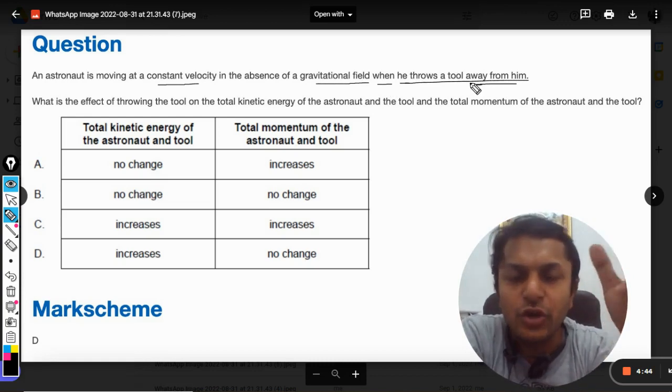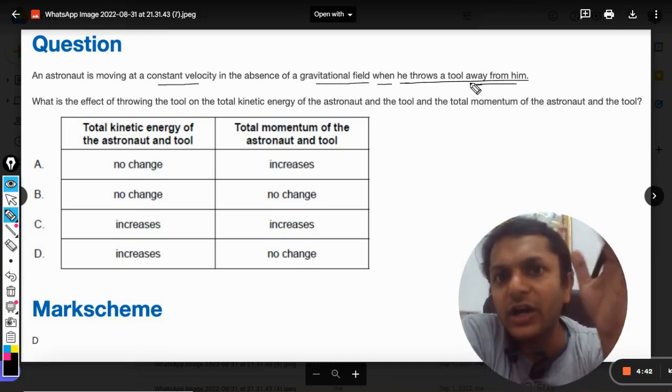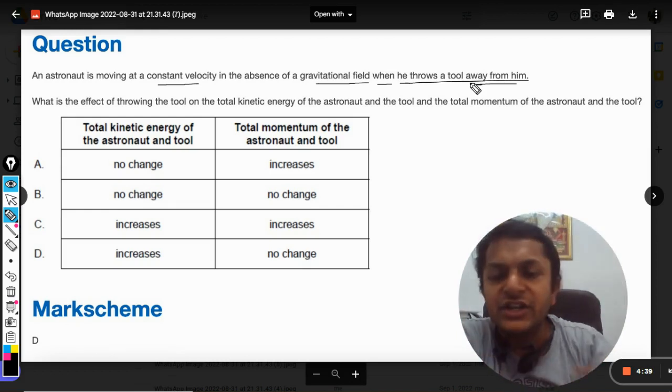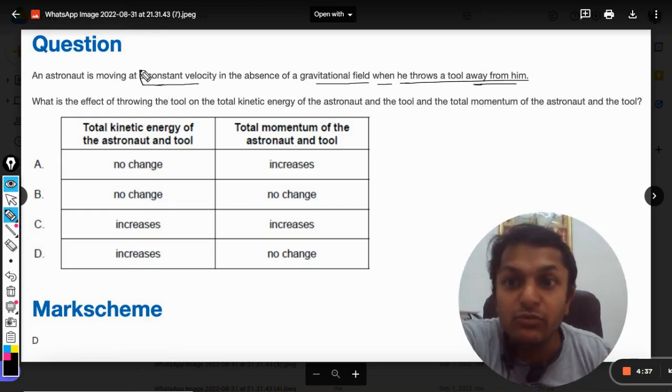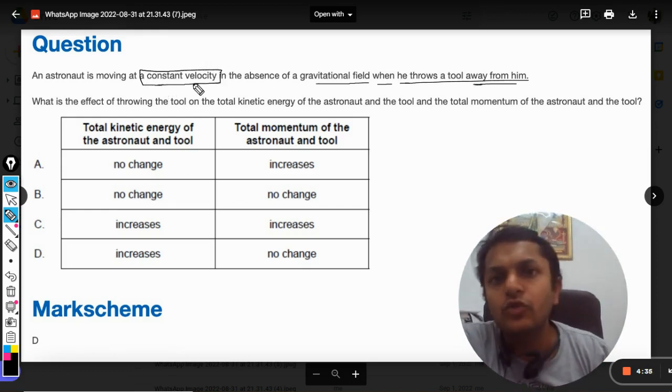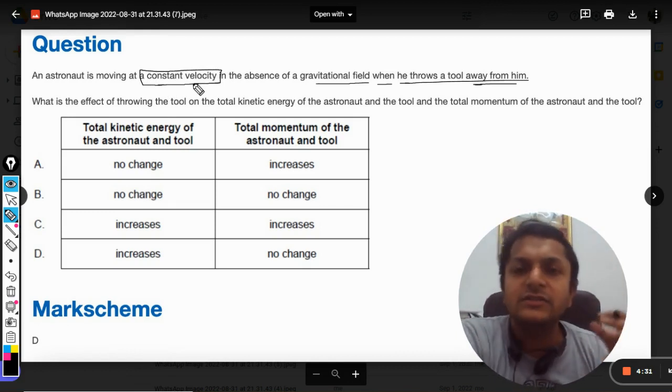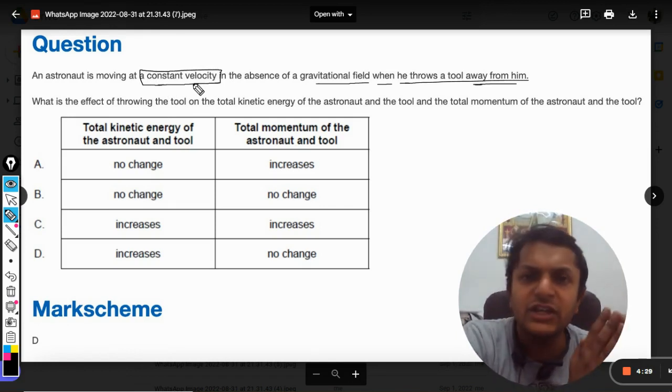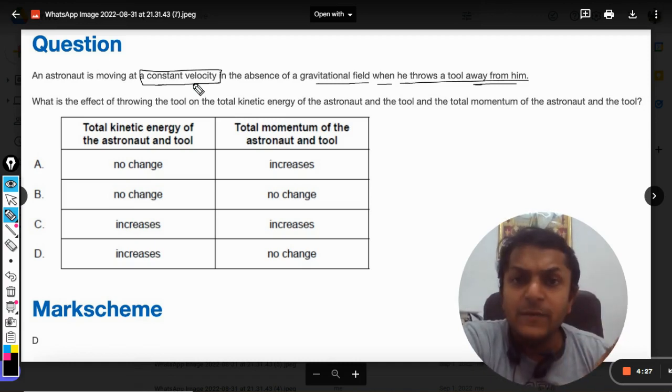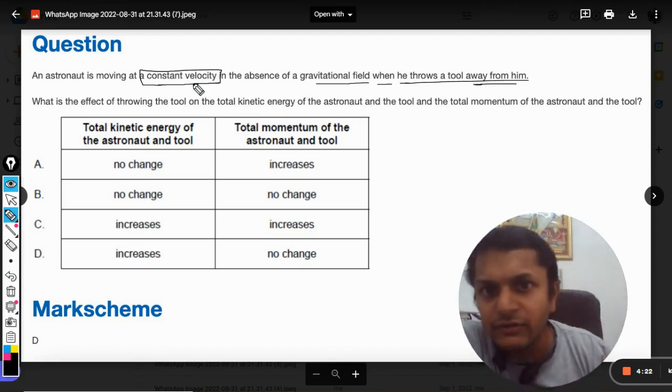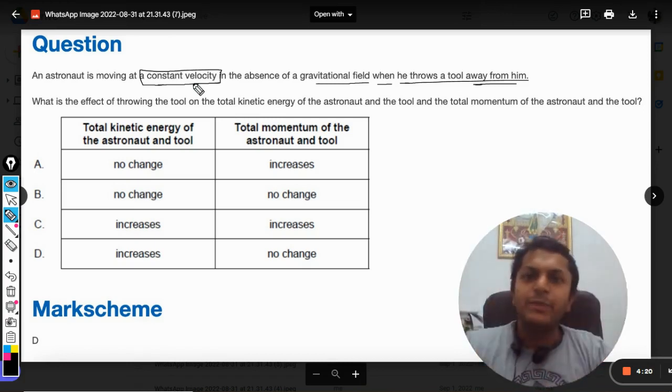Now what is happening? The astronaut is throwing a tool away from him. But the initial condition is that the astronaut is already moving at a constant velocity. And we all know that when something is moving at a constant velocity or something is at rest, the external force has to be zero. And in that case, momentum is always conserved. So this is the complete picture.